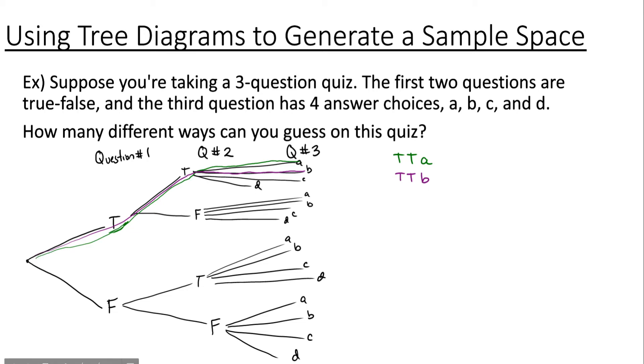Following the third branch we would see we guess true, guess true again, then guess C on the third. If we follow the next branch we see we would guess true, true again, and then D.